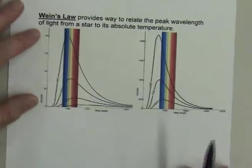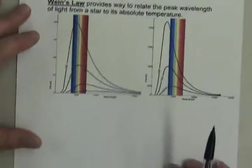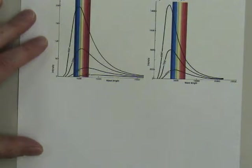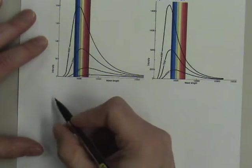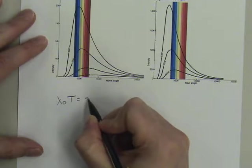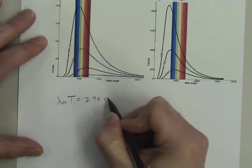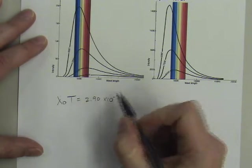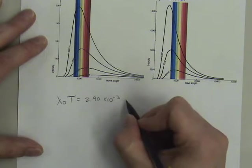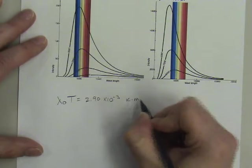Now, we've actually already looked at this formula before but there is a specific formula and this is what Wien's Law actually tells us and that is a way to calculate the exact temperature. So, λ₀T is equal to a constant and that constant is 2.90 times 10 to the minus 3. Now, of course, this is in meters, the wavelength, temperature in Kelvin, so that gives us units of Kelvin meters.